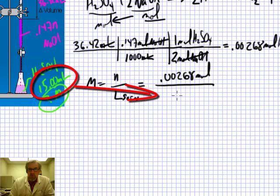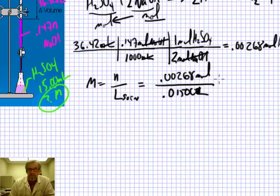In liters, I would have to divide by 1,000, and that would be 0.01500 liters. My unit then is moles per liter, or molarity. I should have three sig figs in my answer, and 0.178 molar is the answer.